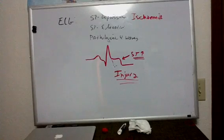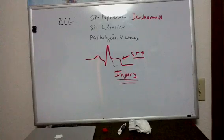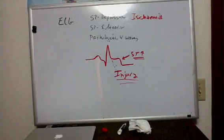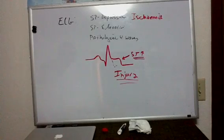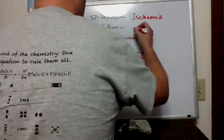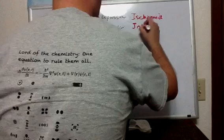ST elevation can also be manifested in certain types of injury — perhaps a traumatic event or a myocardial contusion. ST elevation can also be the result of certain blocks; for example, a bundle branch block can manifest itself as a falsely elevated ST segment. But generally speaking, ST elevation is characteristic of injury.